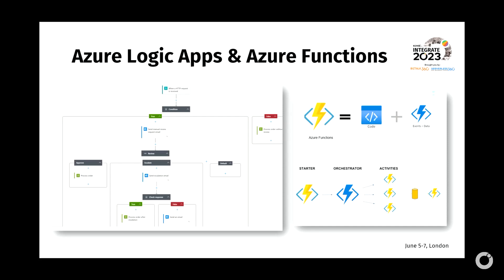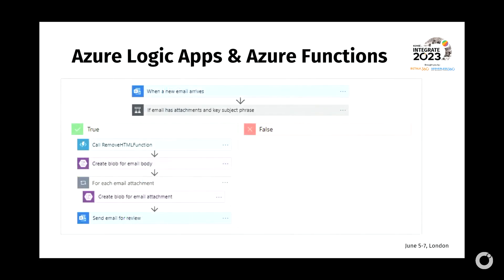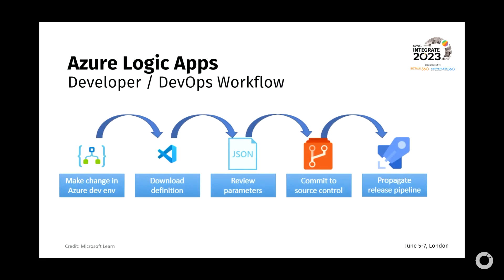Focusing on the two technologies: Azure Logic Apps and Azure Functions. Going deeper into Azure Functions — there's the standard Azure Functions and the extension called Durable Functions, which we'll learn more about. In Logic Apps you can call an HTTP trigger as an action. For developer and DevOps workflows: you make a change in the Azure dev environment, download the definition or review the parameters, commit, and run the pipelines.